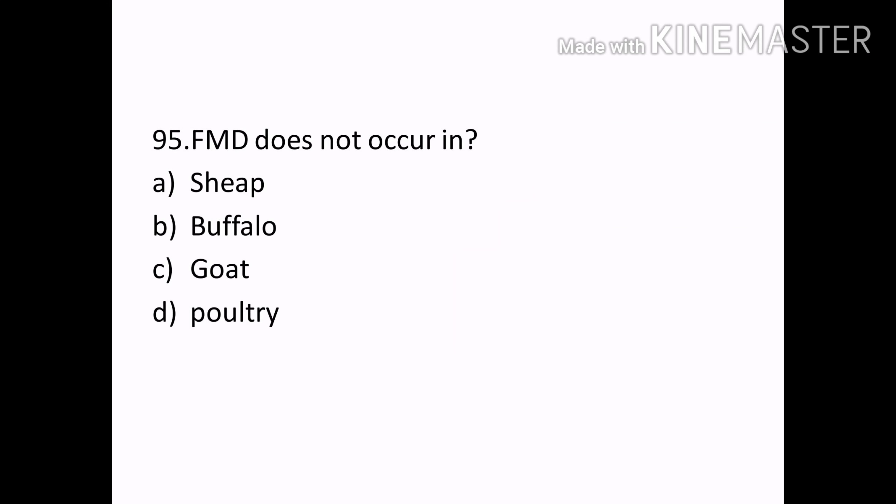FMD (foot and mouth disease) does not occur in: Options — Sheep, Buffalo, Goat, Poultry. Correct answer: Option D — Poultry.